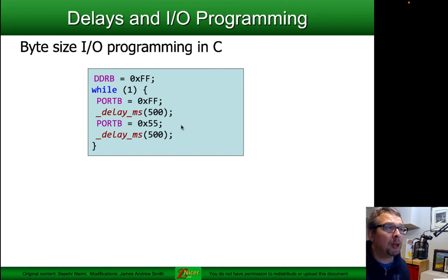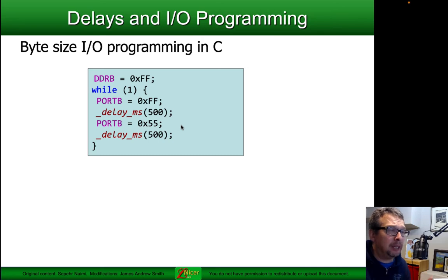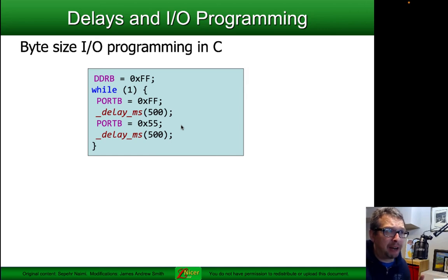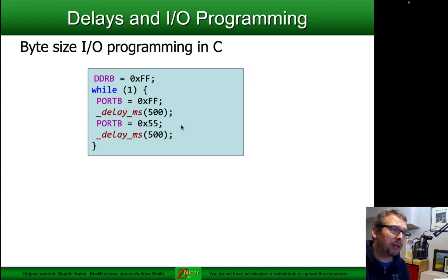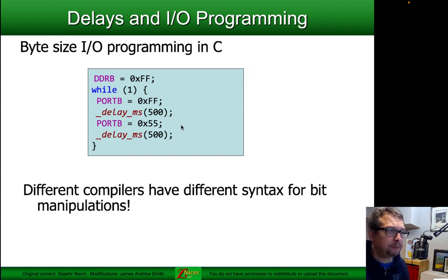Here is an example where we're turning an I/O pin on and off — in this case multiple pins — using the Port B definition. We have a while loop where Port B is set to 0xFF, so all values in Port B are turned to 1 or high, and then we have a delay of 500 milliseconds. Then we set some to 0 and some to 1 using the hex value 0x55, and then we put another 500 millisecond delay.